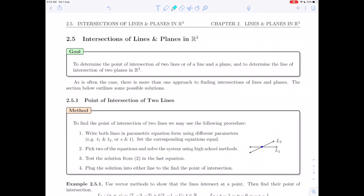Hey everyone, and welcome to section 2.5 about the intersections of lines and planes in R³. The goal of this section is to determine either the point of intersection if we're given two lines or a line and a plane, or to determine the line of intersection if we're talking about two planes. As is often the case, there's more than one way of doing this, and so I'm going to present a method or a couple possible methods that will work.